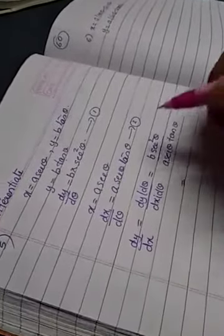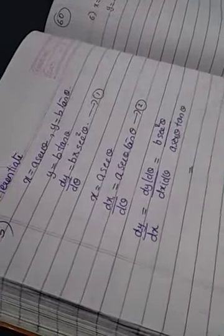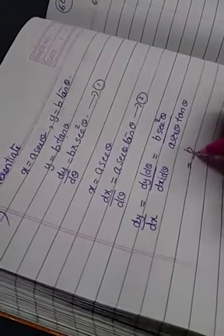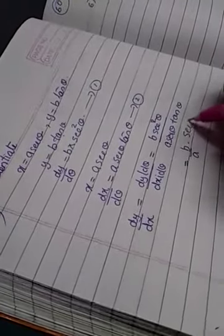If there are like terms, you can cancel. Once sec θ gets cancelled, doesn't it? So, what will be the answer? b/a × sec θ/tan θ.